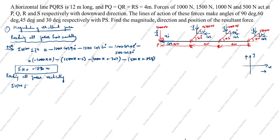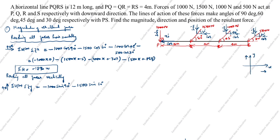Next, resolving all forces vertically. Upward is positive, downward is negative. All forces act downward, so: ΣFy = −1000·sin90° − 1500·sin60° − 1000·sin45° − 500·sin30°. Each arrow comes downward, making each vertical component negative.